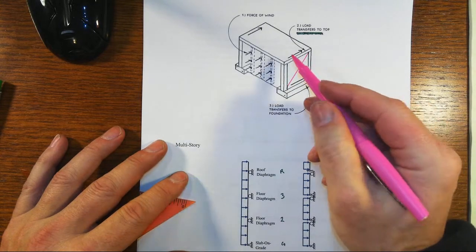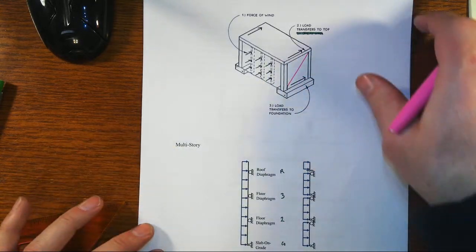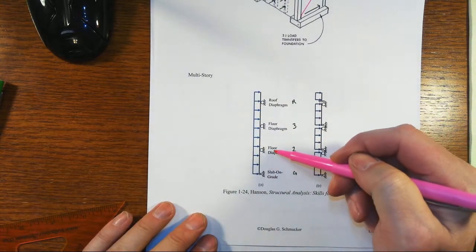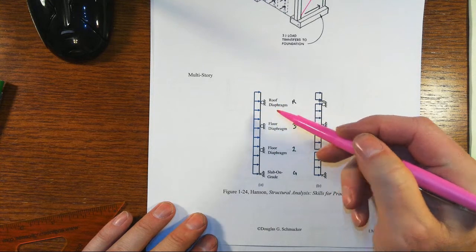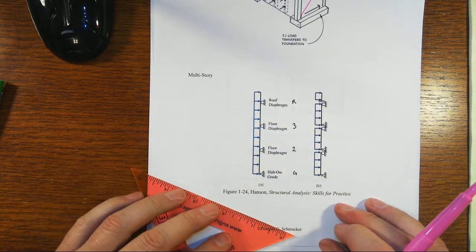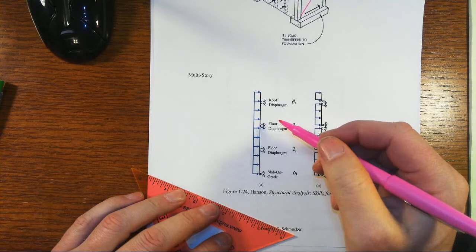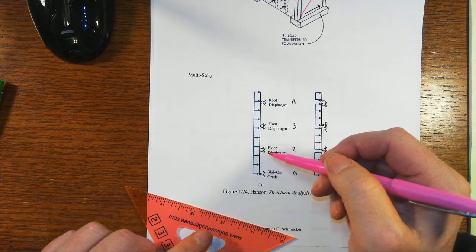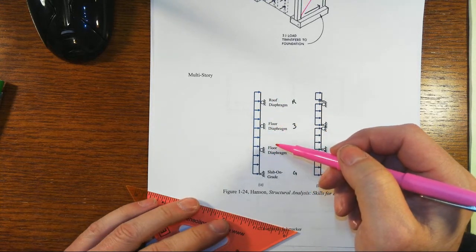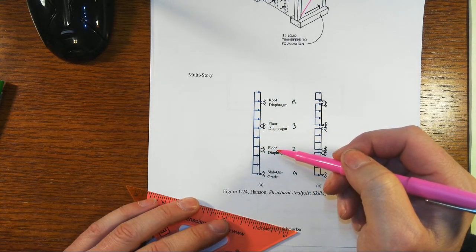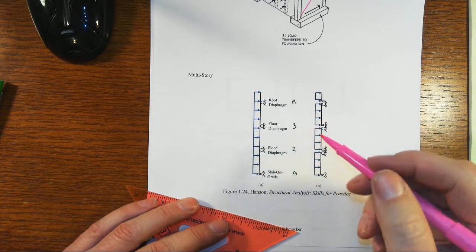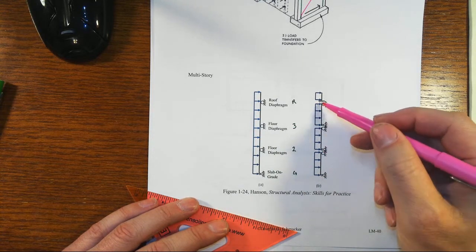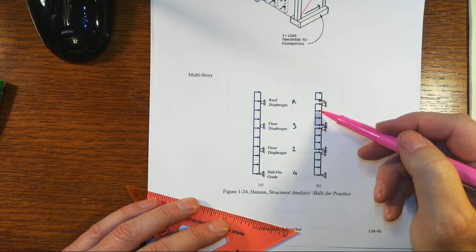So that's the basic kind of action that's happening in a one-story building. Now if you have a multi-story building, then at each and every one of these floors, those floors and roof serve multiple purposes. Not only for transferring gravity loads over to beams and columns, and then down to the ground, but each and every one of those floor levels and roof levels will also serve as a diaphragm.